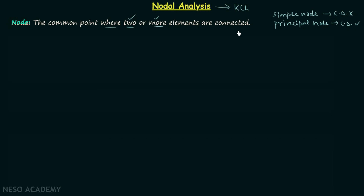At a simple node, current division does not take place, and at a principal node, current division takes place. When we perform nodal analysis, by node we mean principal node. Current division takes place at the principal node, therefore we can write down the KCL equation.